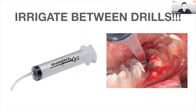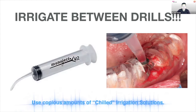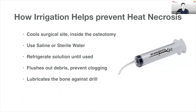After each drill, irrigate the area using a monoject syringe — I use a full syringe of chilled saline between each drill. Chilled irrigation helps prevent heat necrosis by cooling the surgical site inside the osteotomy. Use saline or sterile water, refrigerated until use. Irrigation also flushes out debris to prevent clogging and lubricates the bone against the drill.